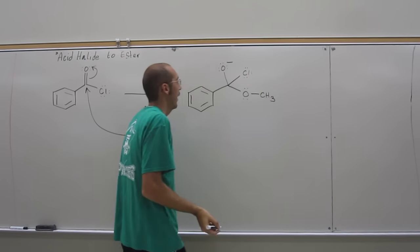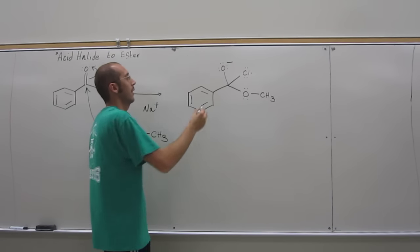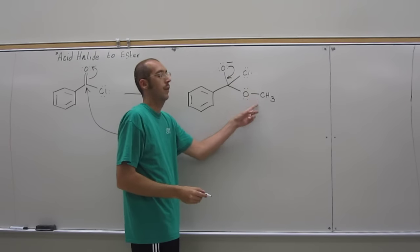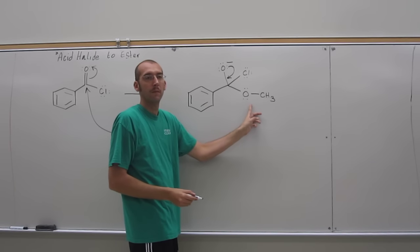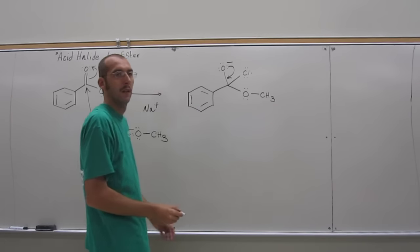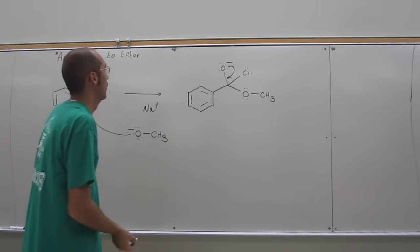So, now we want to ask ourselves, when this thing collapses back down, right, which is going to be the better leaving group, the chlorine or the methoxide, the alkoxide, which one? The chlorine, right, clearly. Why?